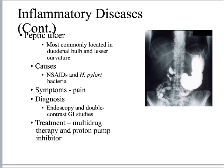A peptic ulcer is generally located in the duodenal bulb and the lesser curvature of the stomach. It can be caused by too much aspirin, certain bacteria, overconsumption of certain foods, or possibly stress. The main symptom is pain in the area of the stomach or right or left upper quadrant. Treatment is generally some kind of multi-drug therapy — they used to treat this surgically but no longer do.